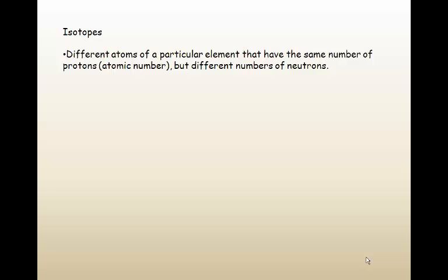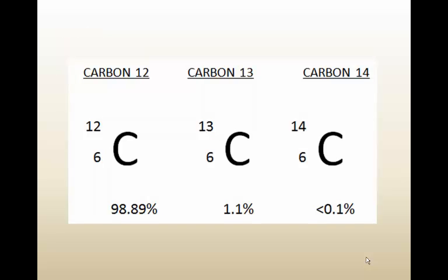Isotopes are different atoms of a particular element that have the same number of protons. That would mean they have the same atomic number, but they do have different numbers of neutrons. One example is carbon. Carbon has three isotopes: carbon-12, carbon-13, and carbon-14. Carbon-12 is the most common. You'll notice that all three isotopes of carbon have an atomic number of six. This is also the number of protons they have.